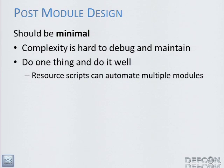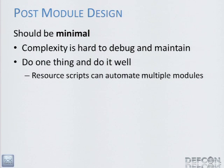I want to talk about design goals and what post modules should be. First, they should be minimal — they should do one thing and do it very well. It's common to see people tie lots of different functionality into a single post module, but a lot of the automation can be done more easily through resource files. If you have modules for stealing passwords, for stealing this kind of file, for this kind of data — having those separated out makes it easier to categorize them and tie them together with other kinds of automation.